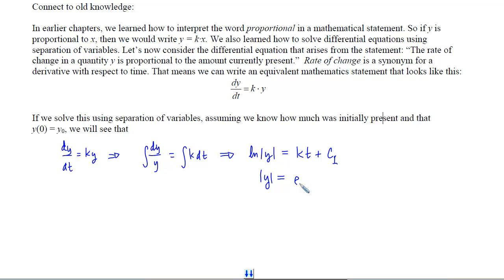That would give me e raised to the kt plus c sub 1. Now if I want to get y out of the absolute value, we recall that the inside of that absolute value could either be plus or minus e to the kt plus c sub 1. Now y is by itself, but this still looks pretty messy. So what we're going to do is we're going to use properties of exponents to rewrite this as e to the c sub 1 times e to the kt.